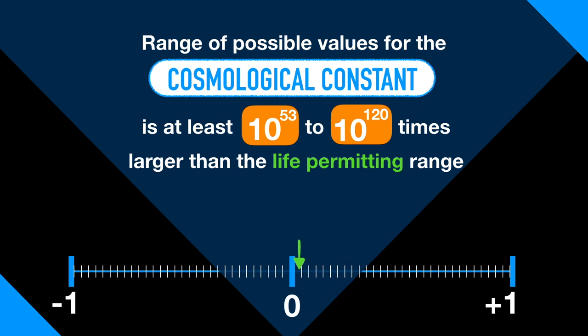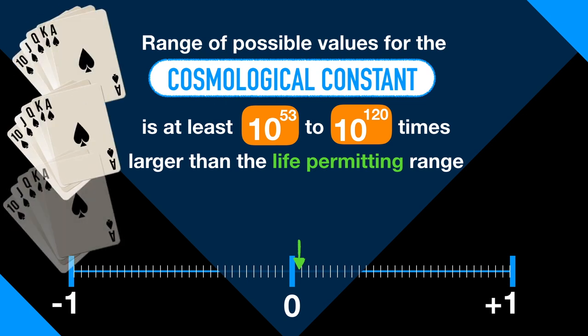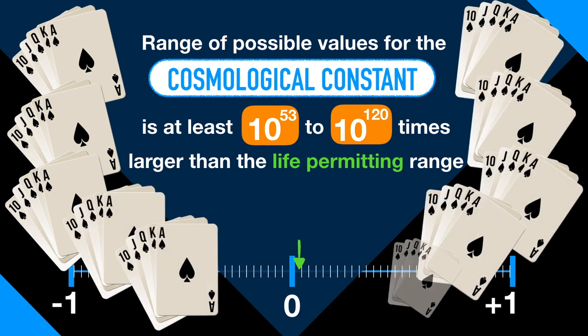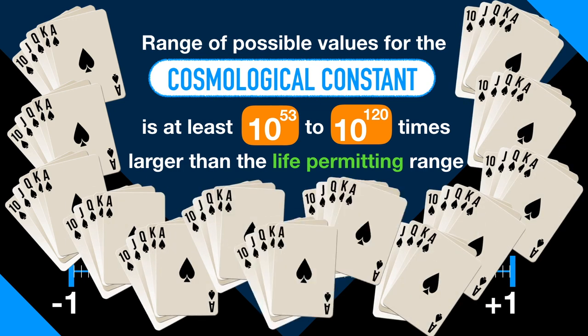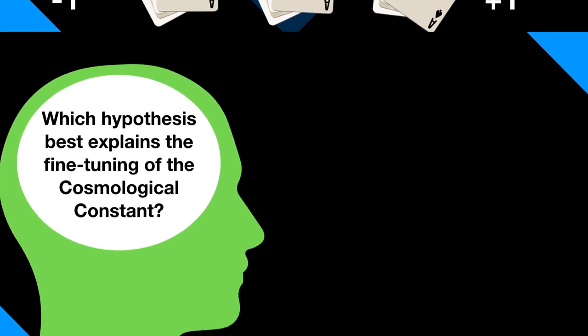To put that in perspective, those odds are about the same as getting dealt a royal flush for 20 consecutive hands in a game of poker. So we're left with what appears to be this enormous coincidence that cries out for explanation. The question is, which hypothesis best explains the fine-tuning of the cosmological constant?